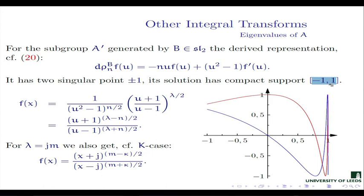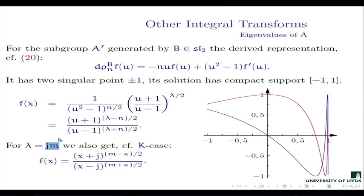Let us concentrate on the interval (−1,1). If we solve that differential equation, we see the function is rather similar to what we had before. But this time we do not have a restriction that m must be an integer — that condition appeared with complex numbers and followed from the compactness of subgroup K. Here that condition is not necessary; lambda may be an arbitrary real number.